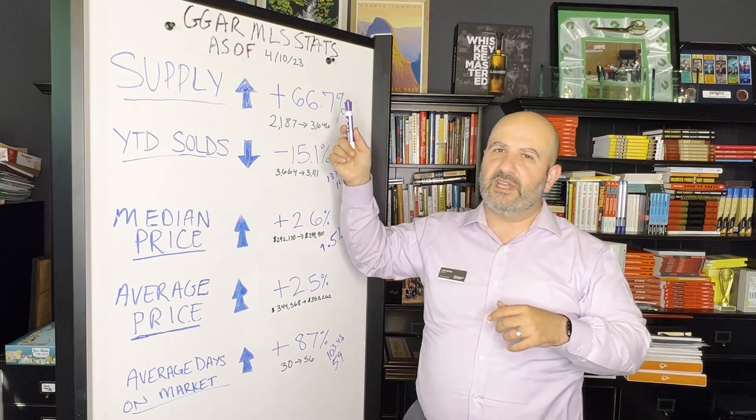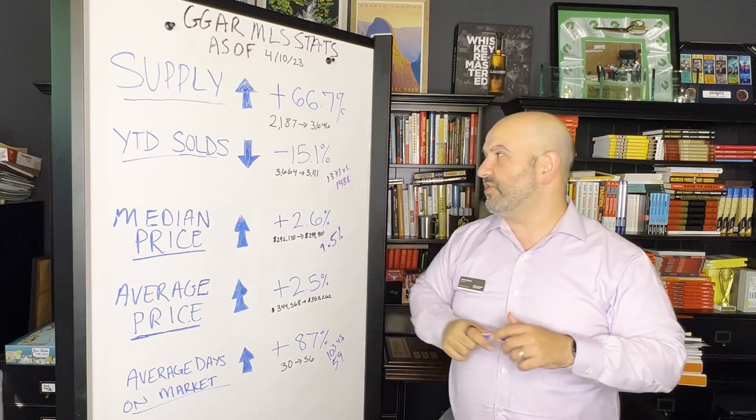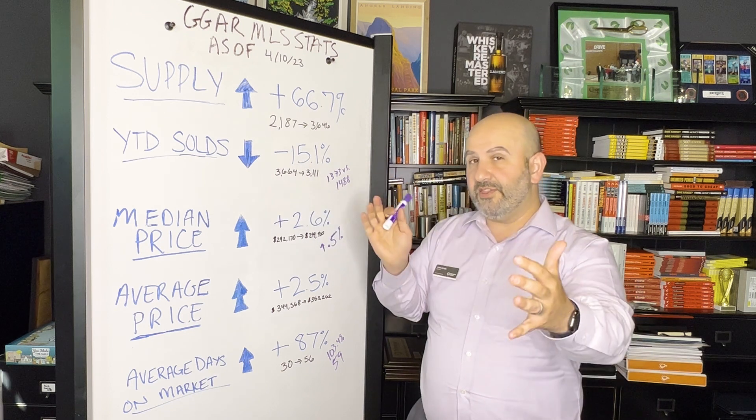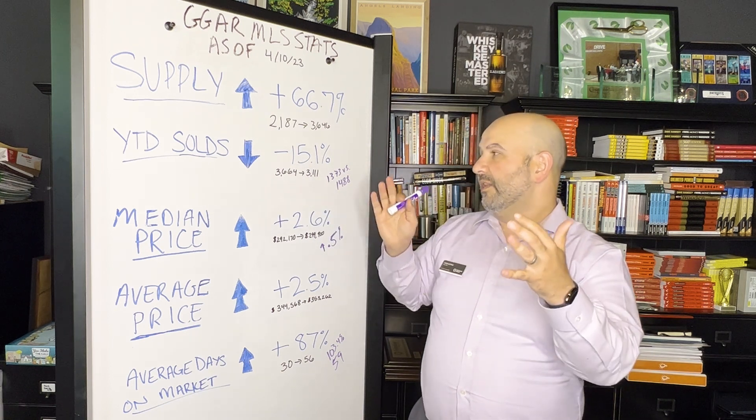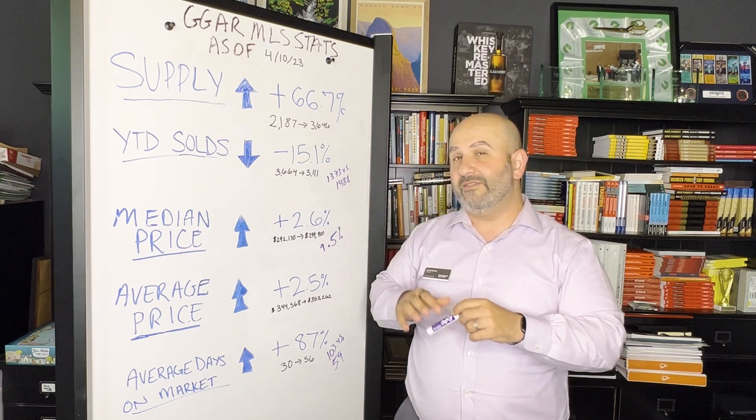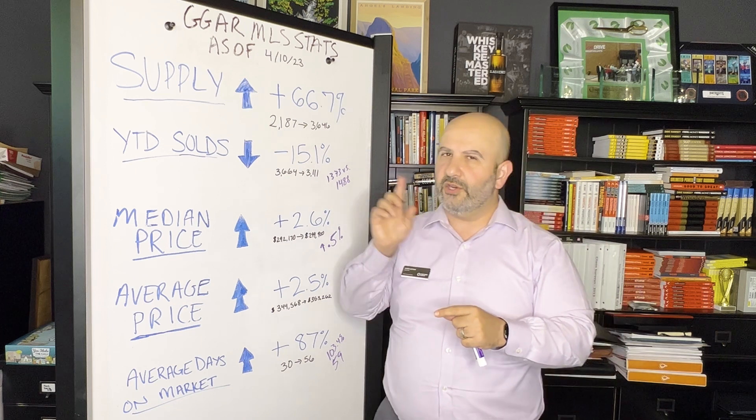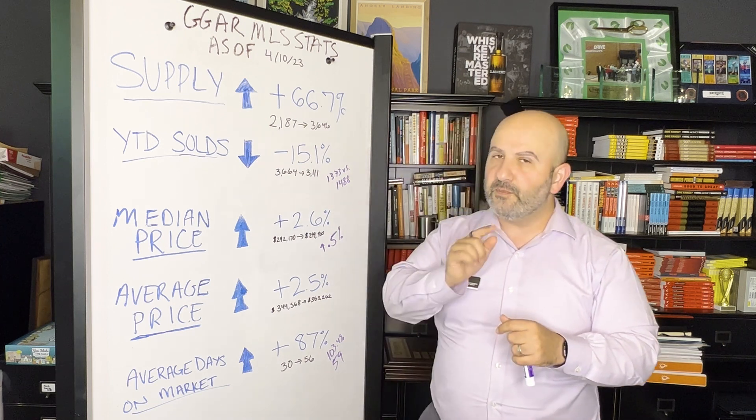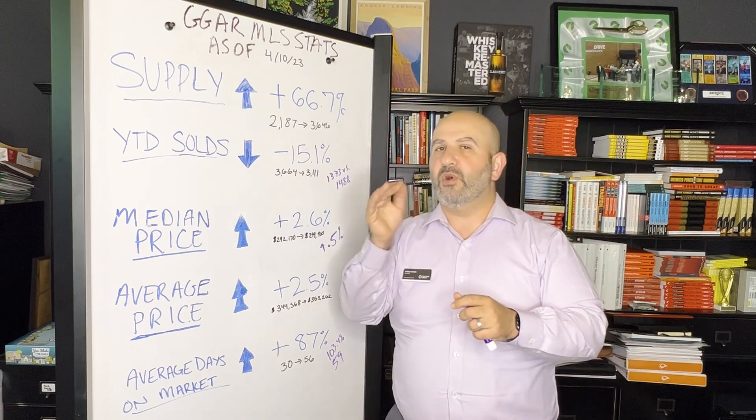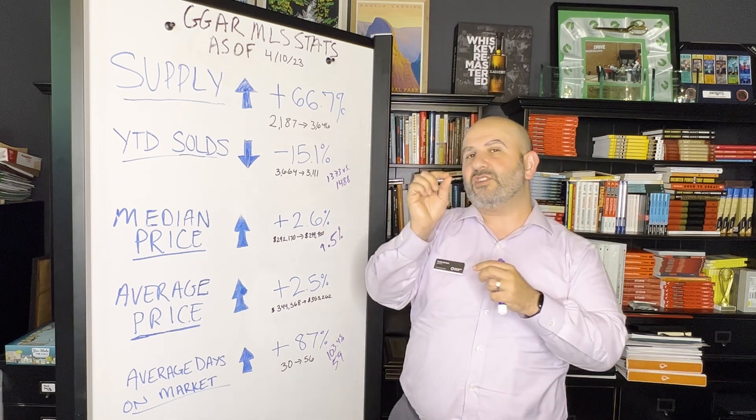Year to date sales - so through the month of March, three months, first quarter - last year we had 3,664, this year 3,111. That's a decrease of 15%. What's interesting here is that we started the year in January with it down 30%, through February we're down 20%, and through March we're now down 15%. So that number is actually coming up.